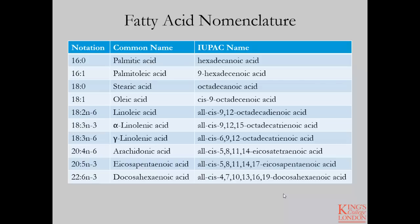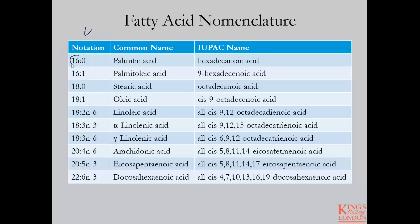Staying with fatty acids, I wanted to cover the naming conventions that you'll encounter in scientific literature as well as textbooks. Here you can see I've listed the same fatty acid but used three different naming conventions. This is the scientific or shorthand notation where you have numbers representing the number of carbons in the chain and the number of double bonds present. In this particular case, palmitic acid can be represented as 16:0, but its IUPAC name is hexadecanoic acid.